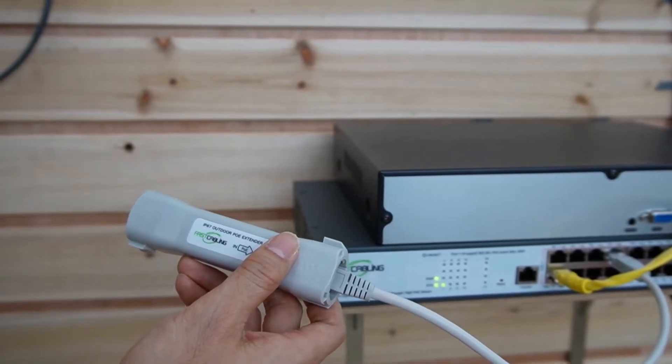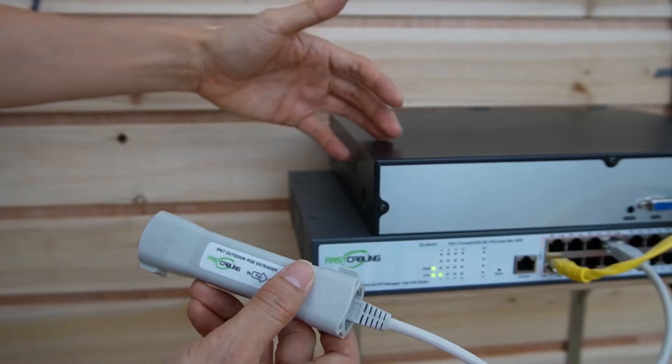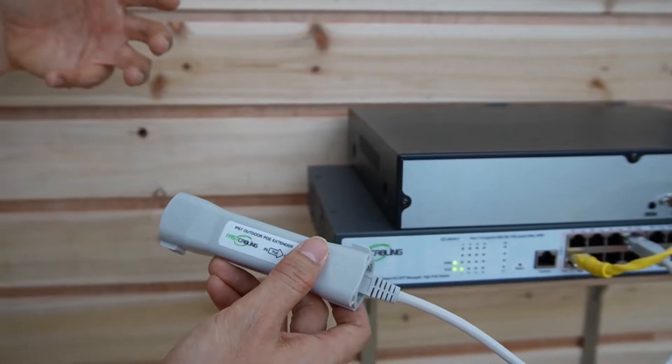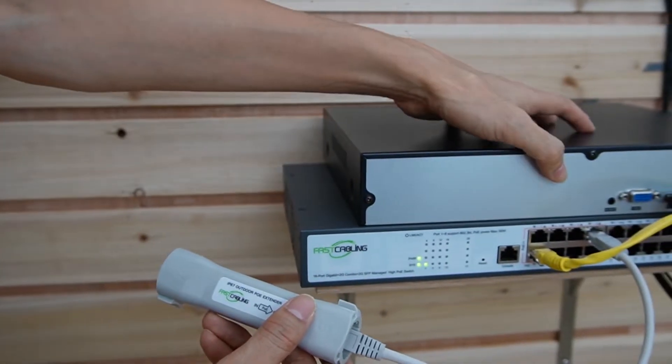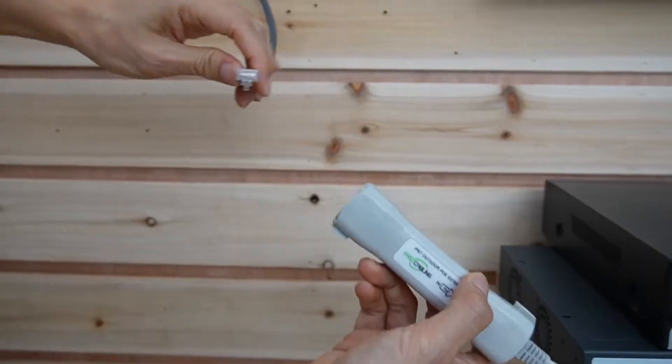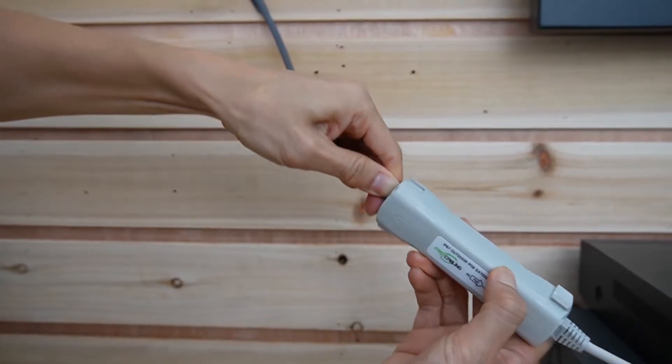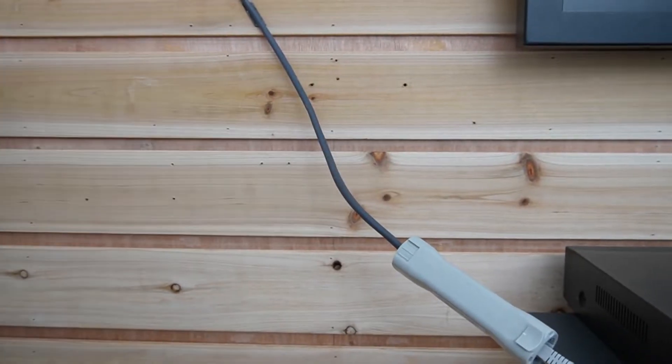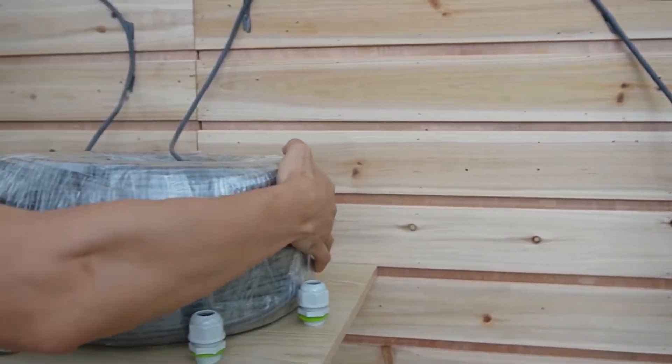The reason is we need to have the high power because we are getting the 1,000-feet extended run. Port number 8 can output 90W. Okay, let's connect the long-run cable to the input port of the first PoE extender. This is the 1,000-feet Ethernet cable.